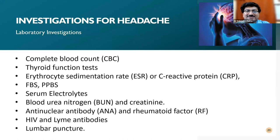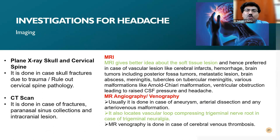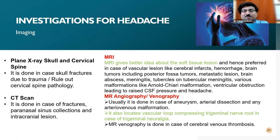For a headache case, we may check complete blood count, thyroid function test, ESR, CRP, sugar levels, serum electrolytes, blood urea nitrogen, ANA, rheumatoid factor, HIV, Lyme antibodies, and lumbar puncture. For imaging, we can go for X-ray of the skull and cervical spine to rule out certain pathologies. CT scan is better for fractures, paranasal sinus collections, and some intracranial lesions. MRI gives better visualization and we can go for MRI venography or angiography if required. Even in trigeminal neuralgia, aberrant vessels — like an aberrant vertebral artery compressing the trigeminal nerve — can be identified with MRI angiography.